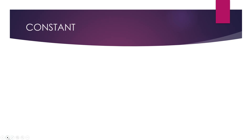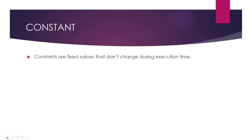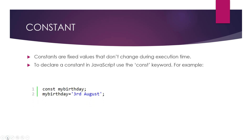Today you are going to learn about the const property in JavaScript. A constant is a fixed value that doesn't change during execution time. To declare a constant in JavaScript, you use the const keyword. For example, there is a const called myBirthday set to '3rd August' — your birthday is fixed and must be the correct value, so if you provide a wrong value it will cause an error.